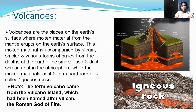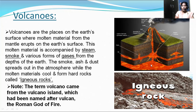Let us have a look at volcanoes. Volcanoes are places on the earth's surface where molten material from the mantle erupts on the surface. This molten material is accompanied by steam, smoke, and various forms of gases from the depths of the earth. The smoke, ash, and dust spread out in the atmosphere while the molten material cools and forms hard rocks called igneous rocks. This is the structure of the volcano — the outer surface is nothing but the lithosphere, which is floating on the upper layer of the mantle called the asthenosphere.